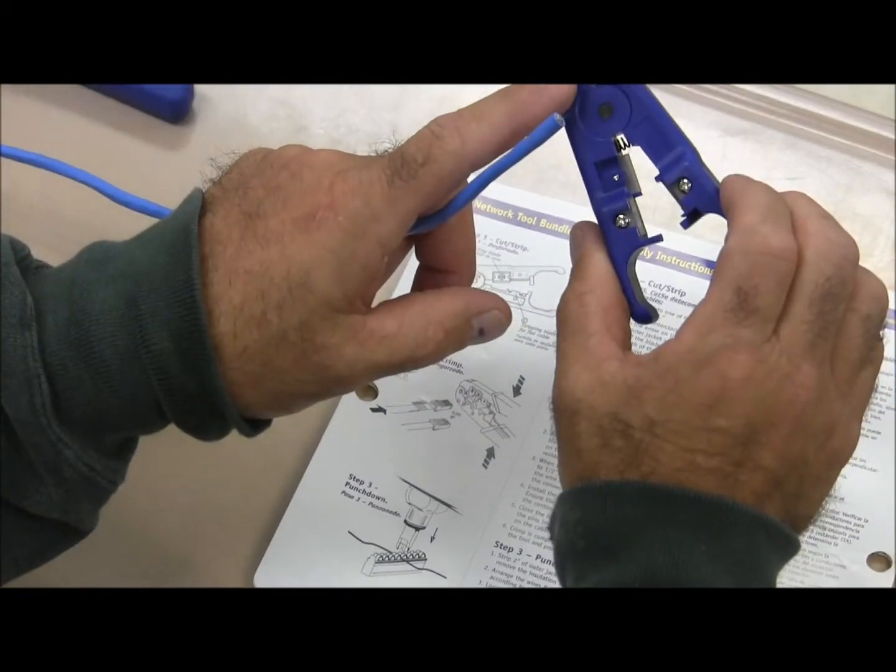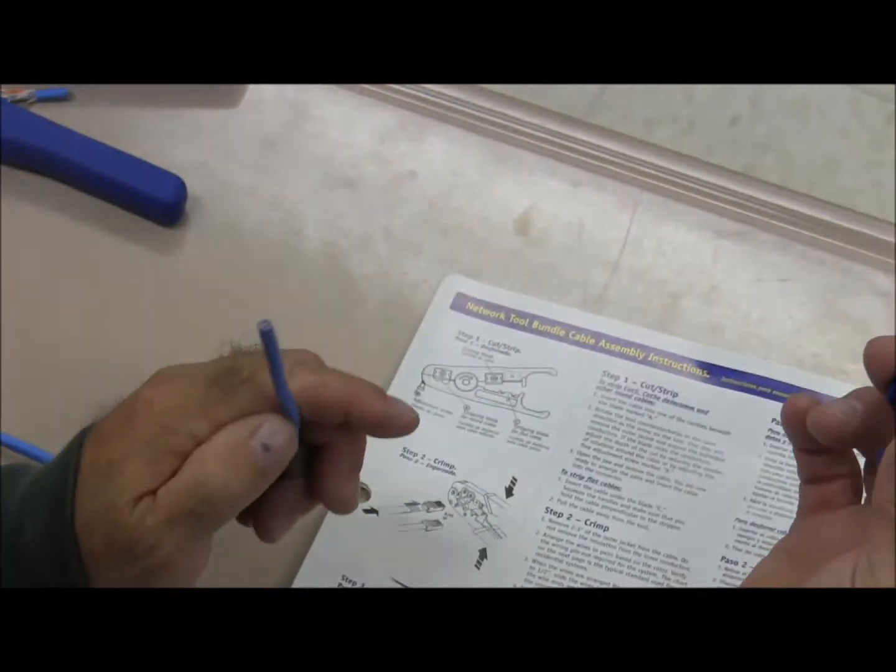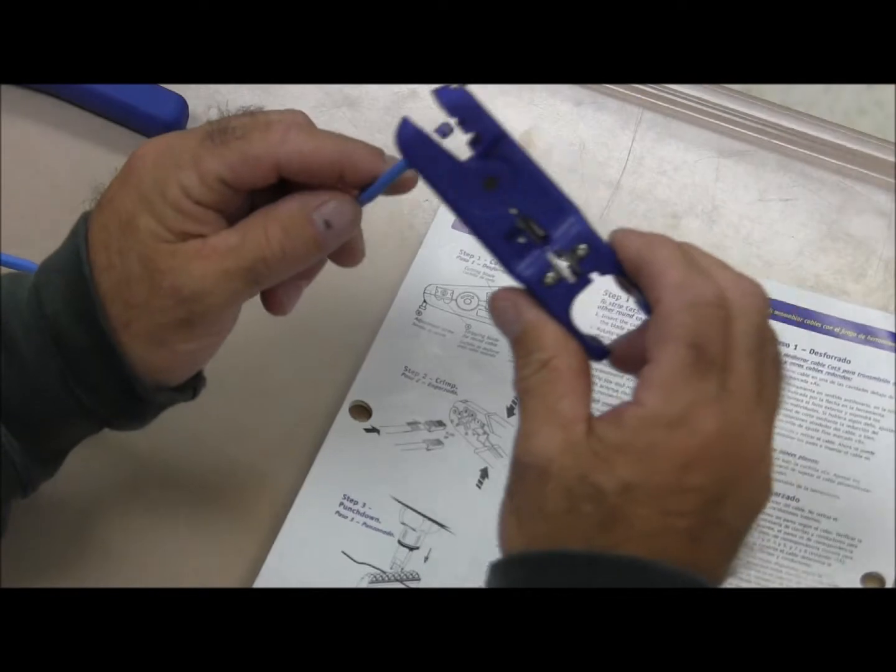The first thing we're going to do is take the stripping tool. There is a mark on here for A - it's a different size cable. This is for the cable that we are currently using.